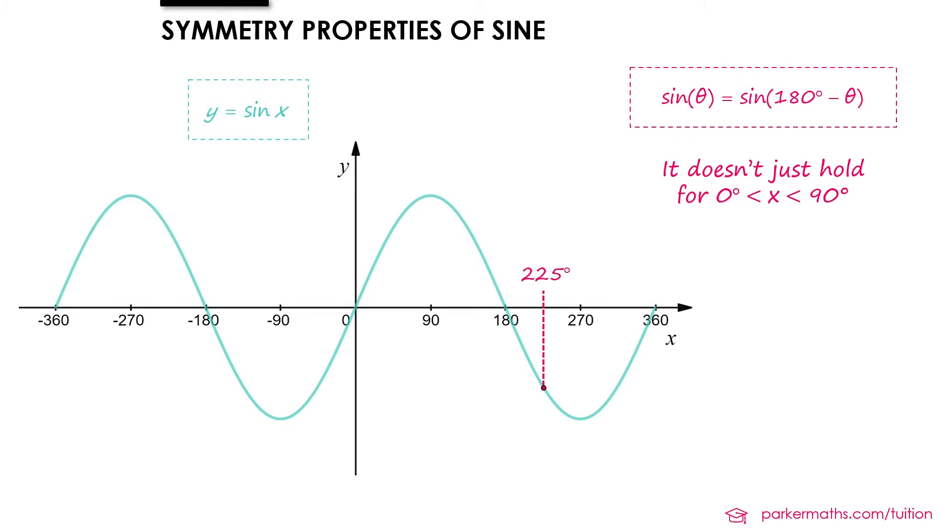And if we do 180 minus 225, we get negative 45. And we can still see that the symmetry is holding about the line x equals 90. We'll draw it on there. And so it doesn't have to just be values between 0 and 90 we choose, it can be any value that we like.